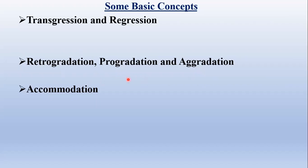Retrogradation, progradation, and aggradation. Retrogradation is associated with a transgression — it occurs as a result of transgression and refers to the building of depositional units landward. In other words, shifting of depositional units or shifting of facies building landward is termed as retrogradation.